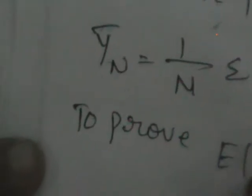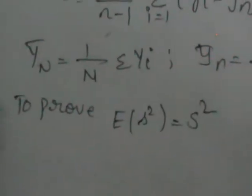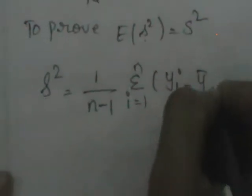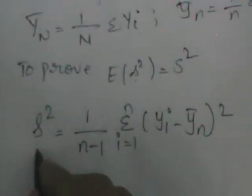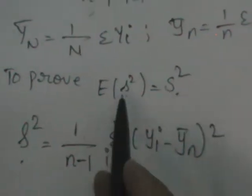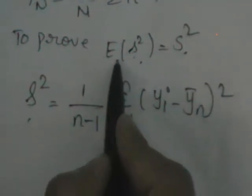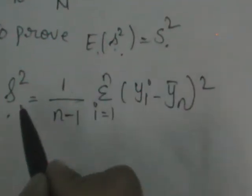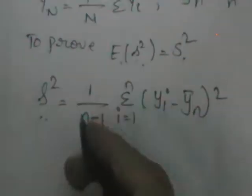To prove E(s²) equals S², before taking expectations, let us first simplify s². Its formula is 1 by n minus 1, sigma i equals 1 to n, (y_i minus ȳ_n) squared. Let us simplify this, then take expectations to show the result. Let us call this equation number 1. It is in the form of (a minus b)², so let us expand this.